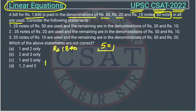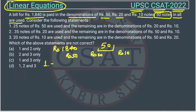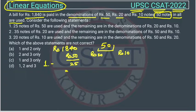Let's define the notes: rupees 50, rupees 20, and rupees 10. In the first case, 25 notes of rupee 50 are used, and the remaining notes are in denominations of 20 and 10. The amount from 25 notes of rupee 50 is 25 into 50, which equals 1250 rupees.